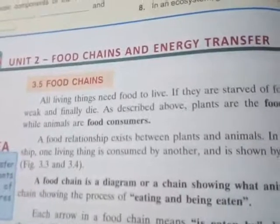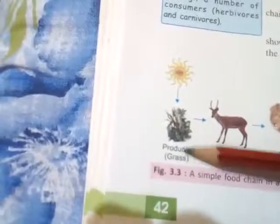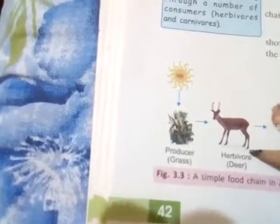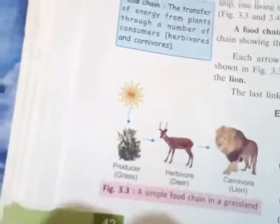Now, looking at a simple food chain in the grassland: the sun is the abiotic component required by the producer — grass. Grass is then consumed by herbivores, which are also called primary consumers — they are plant eaters. After that, the lion takes the deer. This illustrates the food relationship from plant to animal.